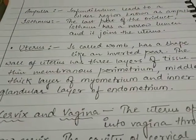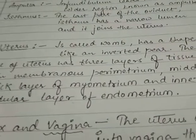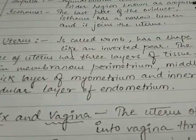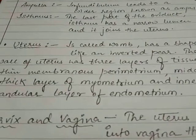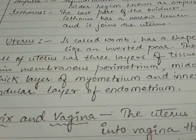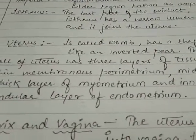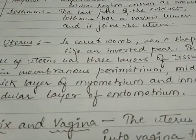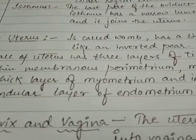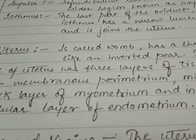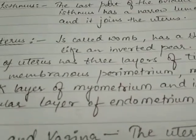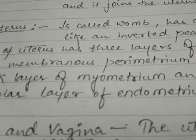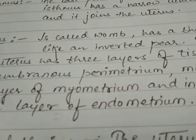Finally, there is an inner glandular layer known as the endometrium. This inner glandular layer prepares a cushion-like bed for the implantation of the zygote after fertilization. If fertilization does not occur, the endometrium layer starts tearing up and comes out in the form of blood, which is known as menstruation.